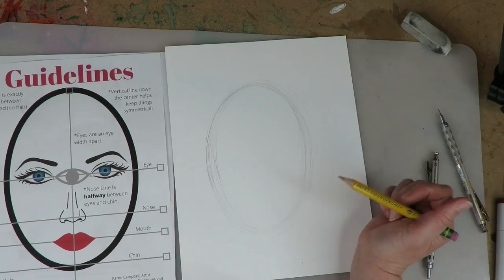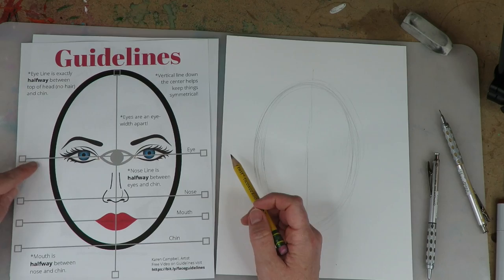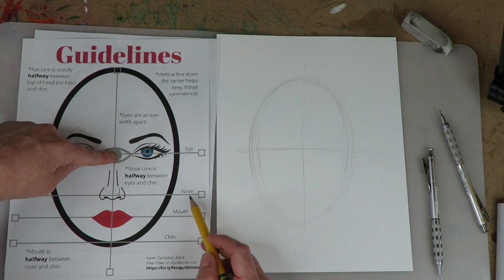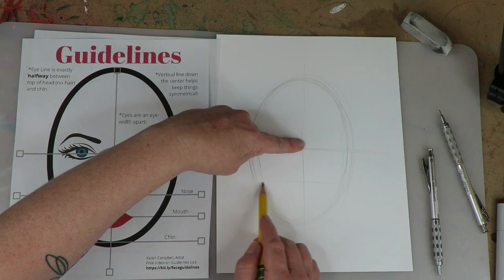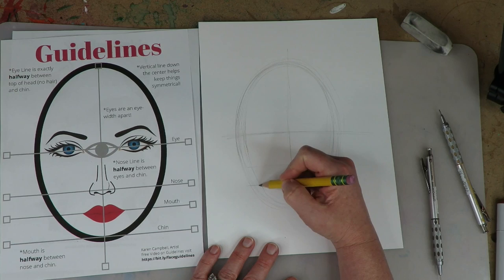Now we're going to put our guidelines in. You're just going to use your sheet to tell you exactly where to go. This is a line down the center. Now we're going to have the eye line - this is exactly halfway. Then we're going to have a nose line, halfway between the eyes and the chin. Mouth line, halfway between the nose and the chin. Already done.